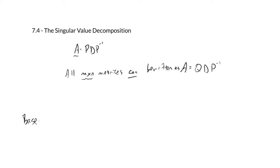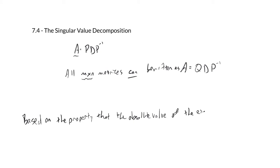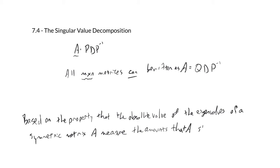It's based on the property that the absolute value of the eigenvalues of a symmetric matrix A measure the amounts that A stretches or shrinks its eigenvectors. We're using the language of stretches and shrinks, but typically we think about it scaling the vector — interpreting that as either stretching or shrinking.